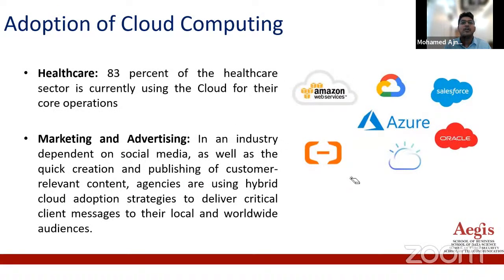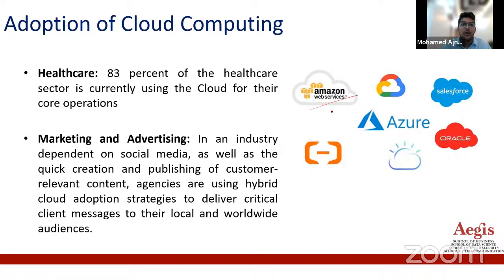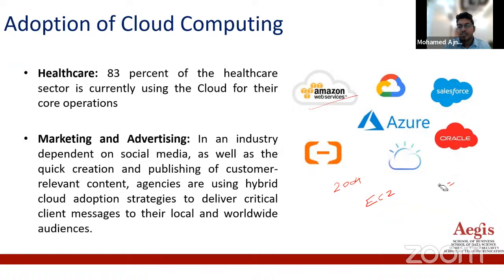Adoption of cloud computing — the popular cloud service providers are Amazon Web Services, GCP, Azure, Oracle, IBM, Salesforce, and Alibaba. Number one will always be Amazon Web Service. From the very beginning of cloud computing, AWS has been in the top position. They launched in 2004 with features like EC2 — Elastic Cloud Compute — and S3 bucket, which is mainly for storage. You can store your data, information, and database on AWS with the help of S3 bucket.